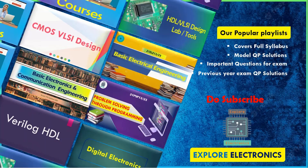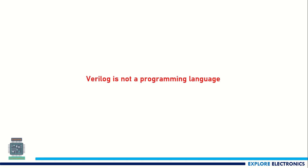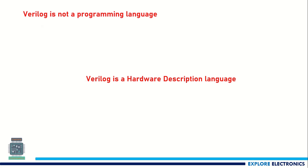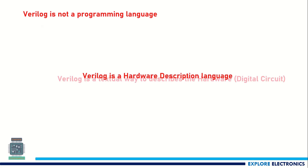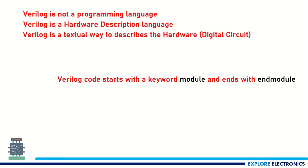Hello everyone, welcome to this video. Let us get into Verilog — what it is, why it is needed, and how we are going to start coding with it. First of all, Verilog is not a programming language; it is a way to code hardware. Verilog is going to represent the hardware, so we call it a hardware description language. Verilog code starts with the keyword 'module' and ends with 'endmodule'.